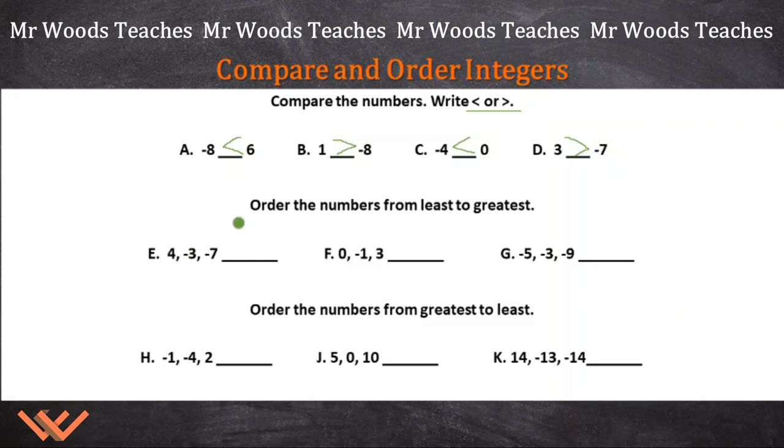Next, order the numbers from least to greatest. So least is what is the smaller of the numbers, and greatest is which is the larger of the numbers. So let's take a look here for E. So we're looking at 4. Okay, that's large. That's smaller than 4, and this is smaller than 4. But which one is the smallest or the least, and that's going to be negative 7. So negative 7, and then negative 3, and then 4.